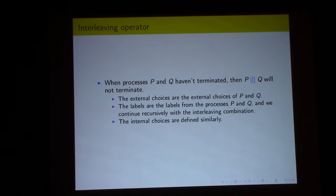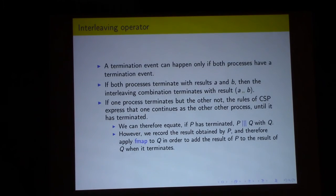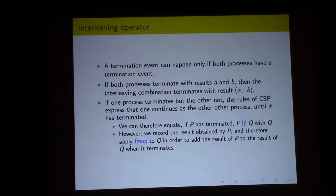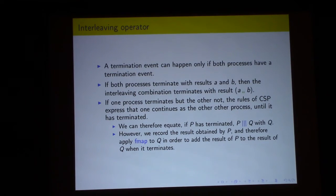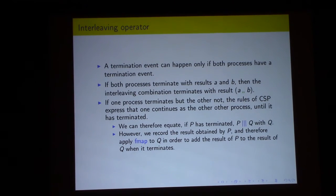Internal choice is defined similarly. The termination event can happen only if both processes have a termination event, so if both terminate with results A and B, the interleaving combination terminates with result (A, B). If one process terminates and the other is still progressing, the combination behaves as the progressing one, and we apply fmap to the progressing process to add the terminating process's result when it eventually terminates.